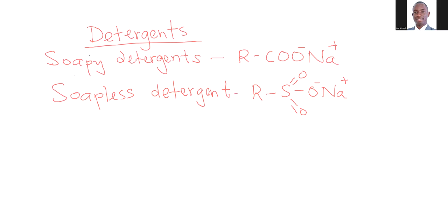Alternatively, the soapless detergent could have a general formula where it now has the benzene ring, and then you get to the S double bond O — O and then O and NA. So these are the two structures of the soapy and the soapless detergents.